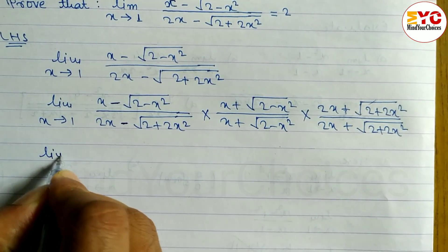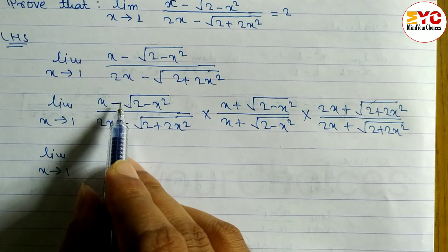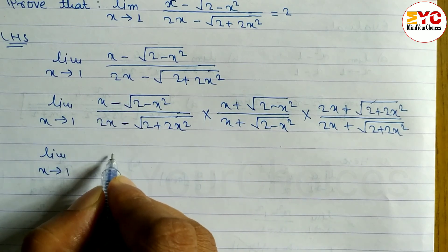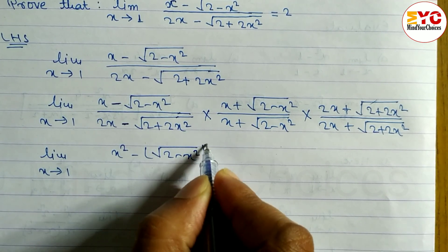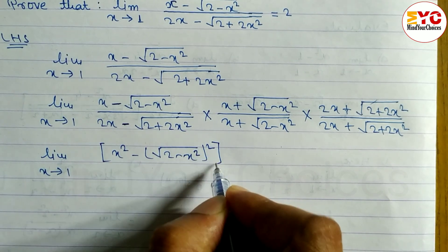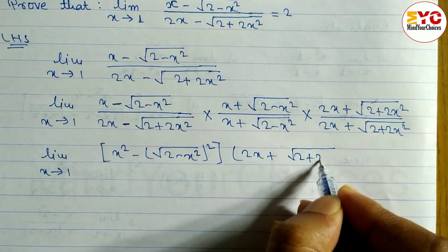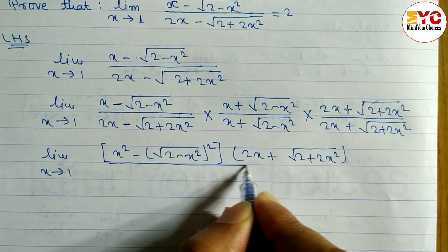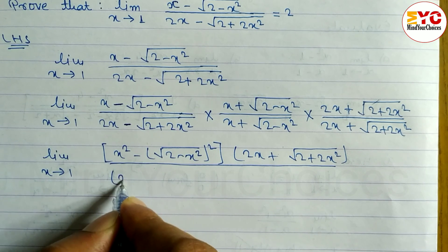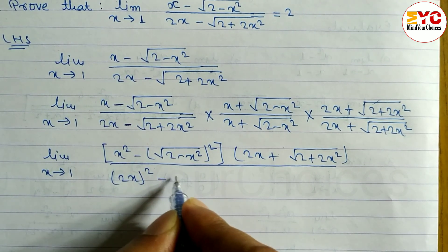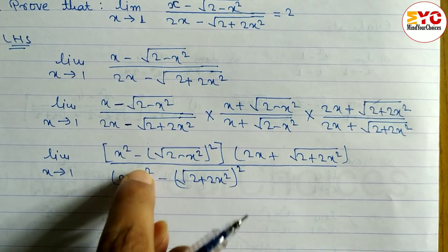After rationalizing, we apply the identity (a+b)(a-b) = a² - b². So the numerator becomes x² minus [√(2 - x²)]² which simplifies, and the denominator becomes [2x]² minus [√(2 + 2x²)]² whole square. We also keep the conjugate factors x plus √(2 - x²) and 2x plus √(2 + 2x²) in the respective positions.